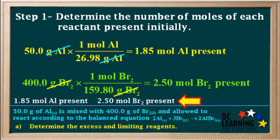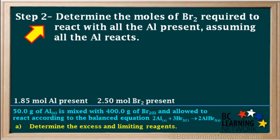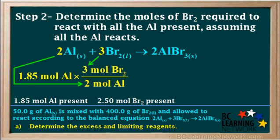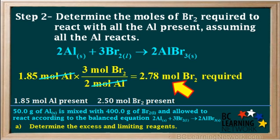We jot these values down. To find the limiting and excess reagents, we calculate the moles of Br2 we would need to completely react with all the aluminum present, assuming it all reacts. Using the coefficients in the balanced equation, we take 1.85 moles of aluminum and multiply by the mole ratio of 3 moles Br2 to 2 moles Al. This gives us 2.78 moles of bromine required to react with all the aluminum present.